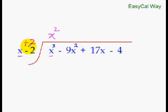Now, to get the next term of your answer, all you have to do is multiply this plus 2 with this x square and add it to the next term of the dividend. So, 2 times x square is 2x square and 2x square minus 9x square will be minus 7x square. So, we will put minus 7x and this will be the second term of the answer.